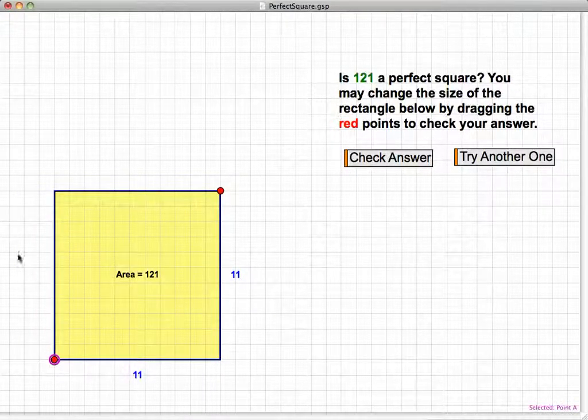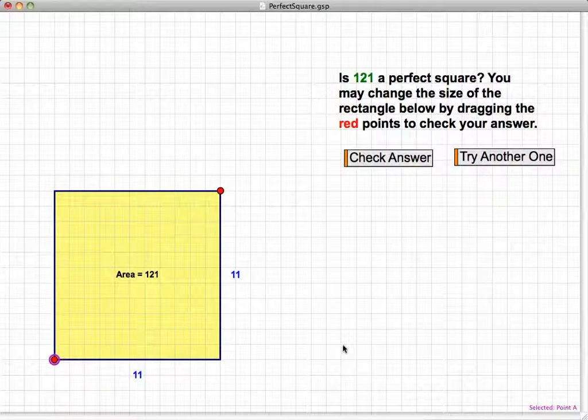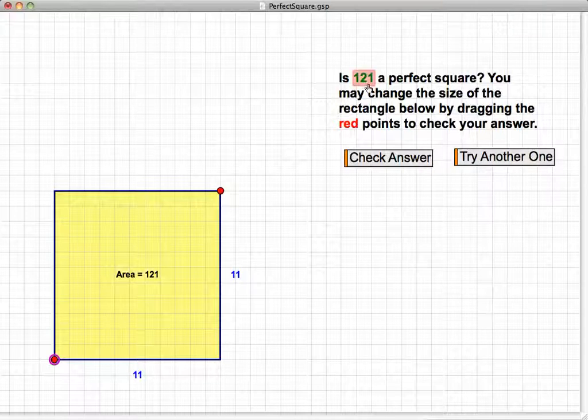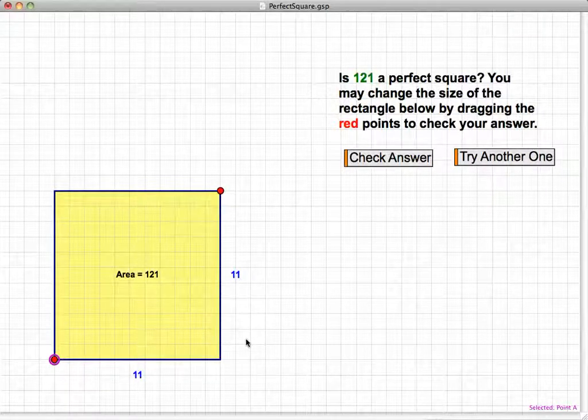And so we don't say it explicitly, but the idea is they can change the size of the rectangle below to try to create a square that has an area of the number here. And so that is sort of the visual way that they can check whether a number is a perfect square or not.